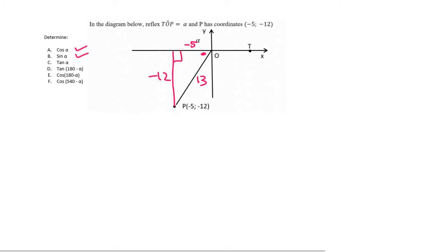Tan alpha is going to be opposite over adjacent, so we can say tan alpha is opposite over adjacent, and so the negatives cancel, and so you end up with 12 over 5.